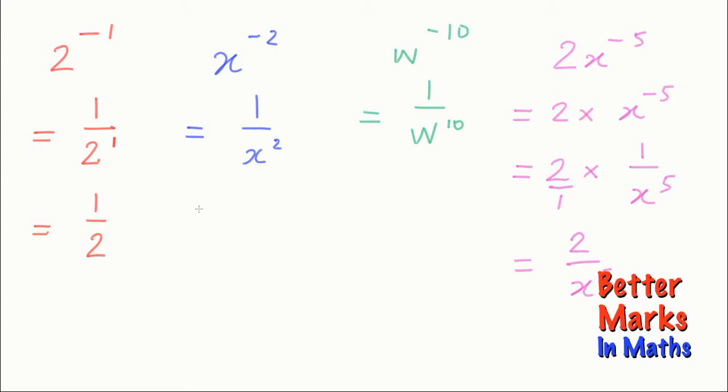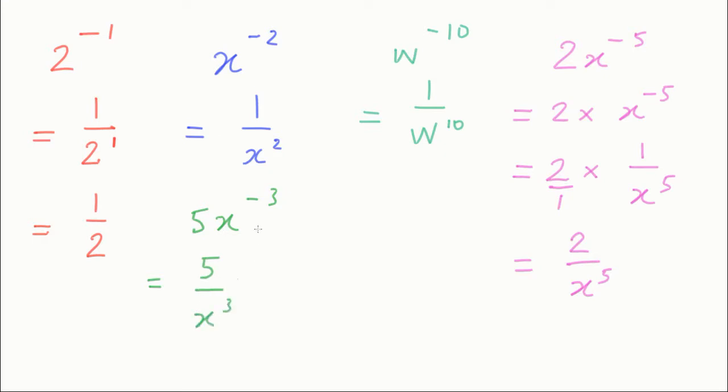So another example: if you have 5x to the minus 3, any time you end up with that kind of answer, really all that happens is x to the minus 3, the x cubed goes on the bottom, and the 5 being a whole number will be on the top, just like the 2 was in the last example.